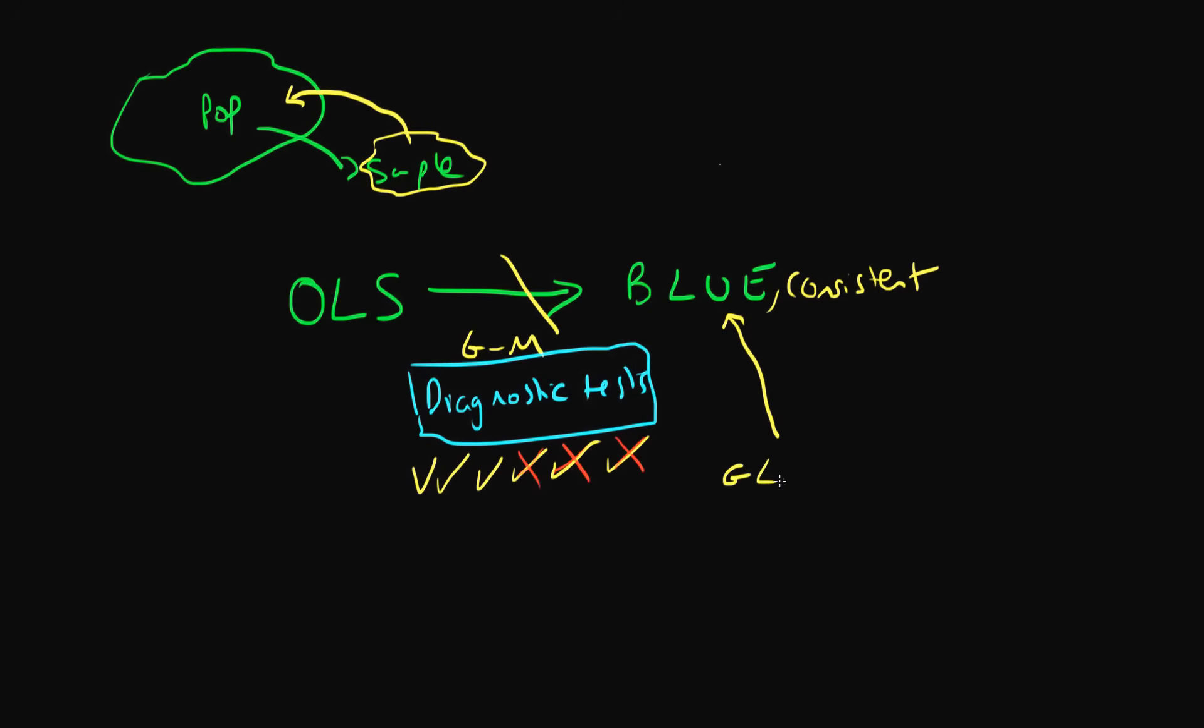Examples might be GLS, IV estimation, or maximum likelihood estimation. These estimators are going to allow us to make good inferences about the population given only a sample of data. Importantly, some of these estimators may allow us to make inferences about the population even though some of the Gauss-Markov criteria are violated.